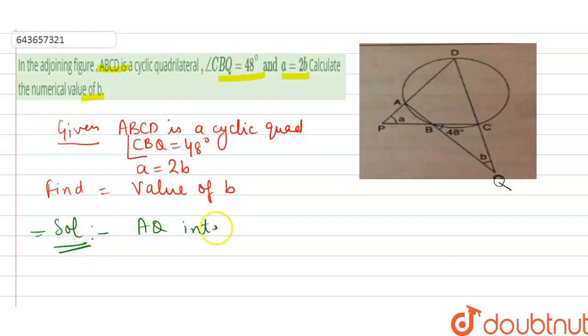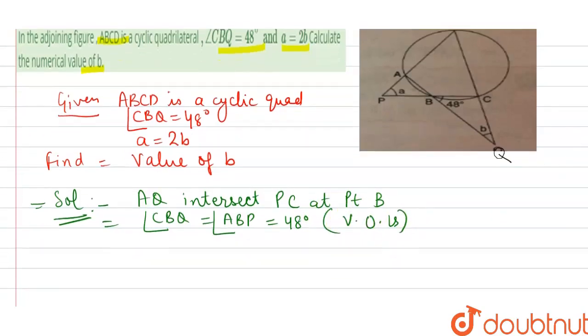AQ intersects PC at point B. Therefore, angle CBQ equals angle ABP equals 48 degrees. Reason behind this: vertically opposite angles.